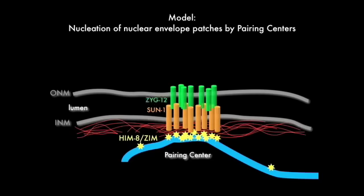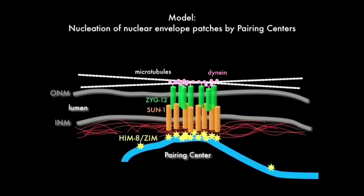SUN1 is known to directly interact with ZYG12 and to be required to anchor ZYG12 in the outer nuclear envelope. And we found that through this bridge of SUN1 and ZYG12, chromosomes interact with the microtubule cytoskeleton and the dynein motor protein.